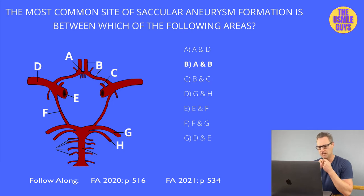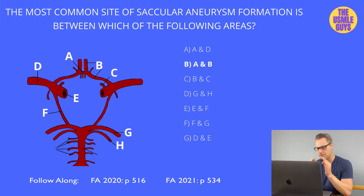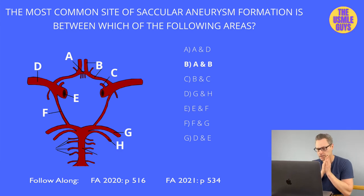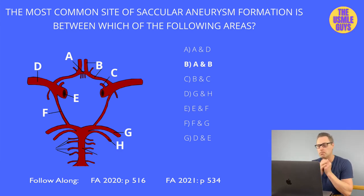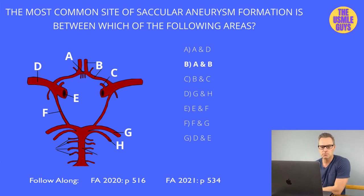The answer is hypertension. This affects smaller arteries like the lenticulostriate arteries, and if this happens it can lead to hemorrhagic intraparenchymal strokes.